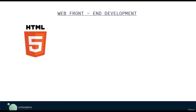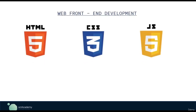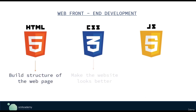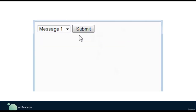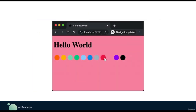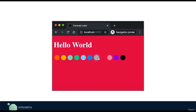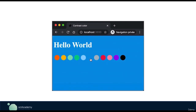To design the frontend, we use HTML, CSS, and JavaScript. We use HTML to build the structure of the web page. We use CSS to make the website look better by adding colors, fonts, layouts, etc. With JavaScript, we can make the website more logical and dynamic — for example, if someone clicks a button, show an alert or change a color. We can also manipulate the DOM using JavaScript.